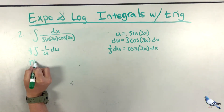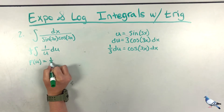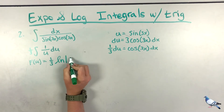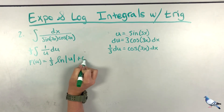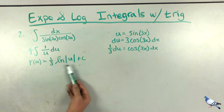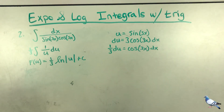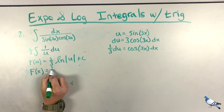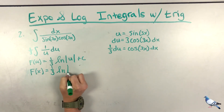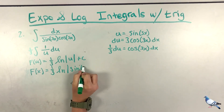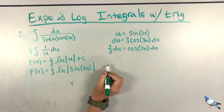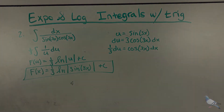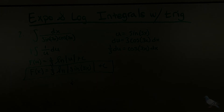Integrating in terms of u: F(u) = (1/3)·ln|u| + C. We use absolute value because you cannot plug a negative number into ln. Writing back in terms of x: F(x) = (1/3)·ln|sin(3x)| + C, and that is the solution to our second indefinite integral.